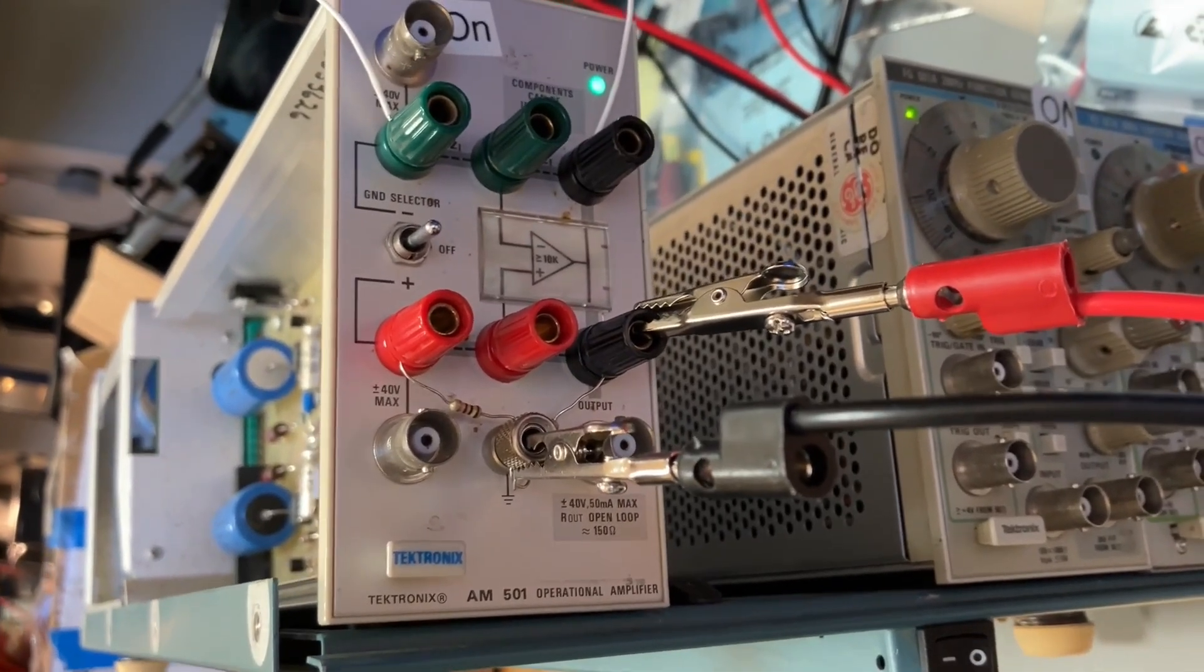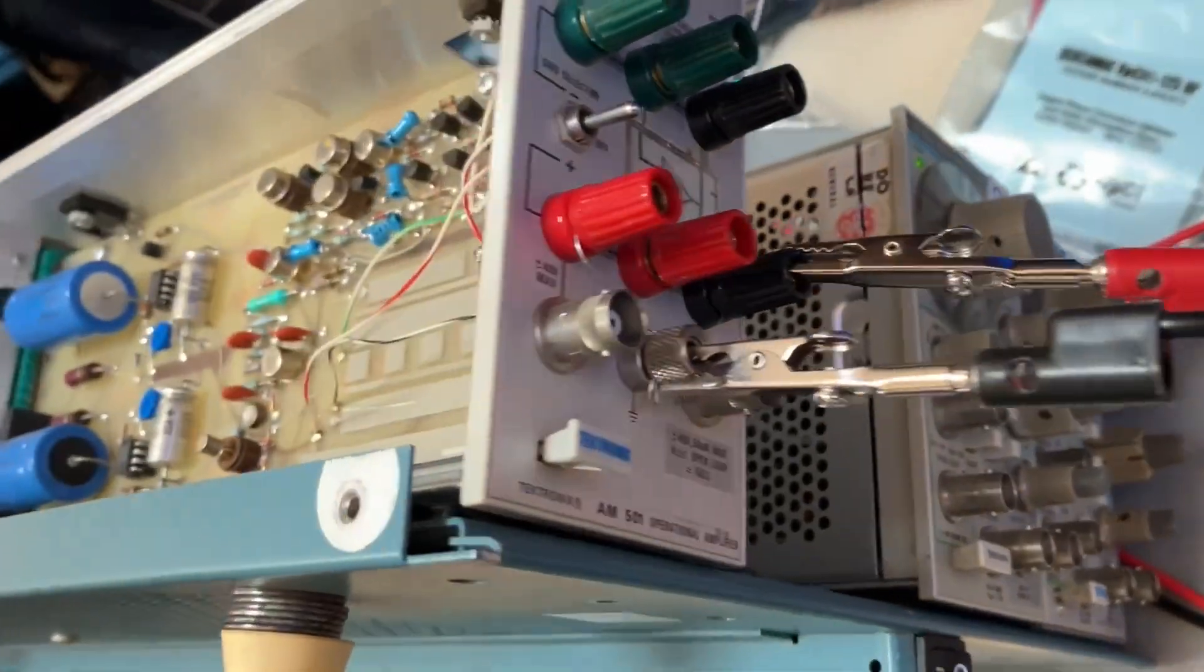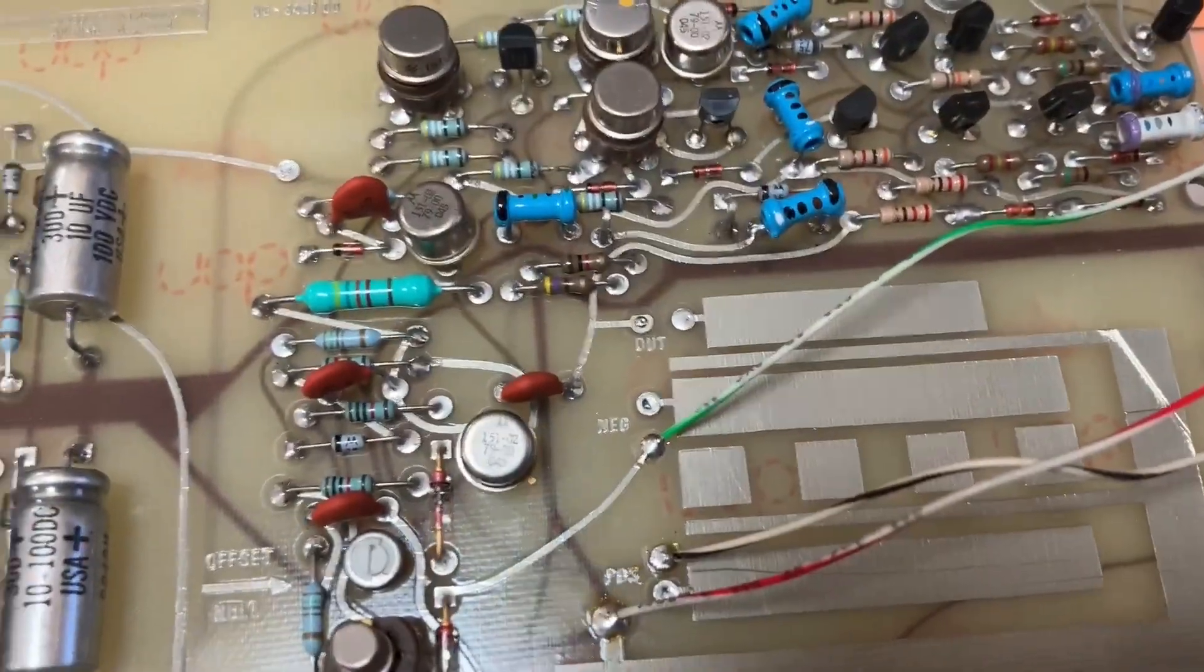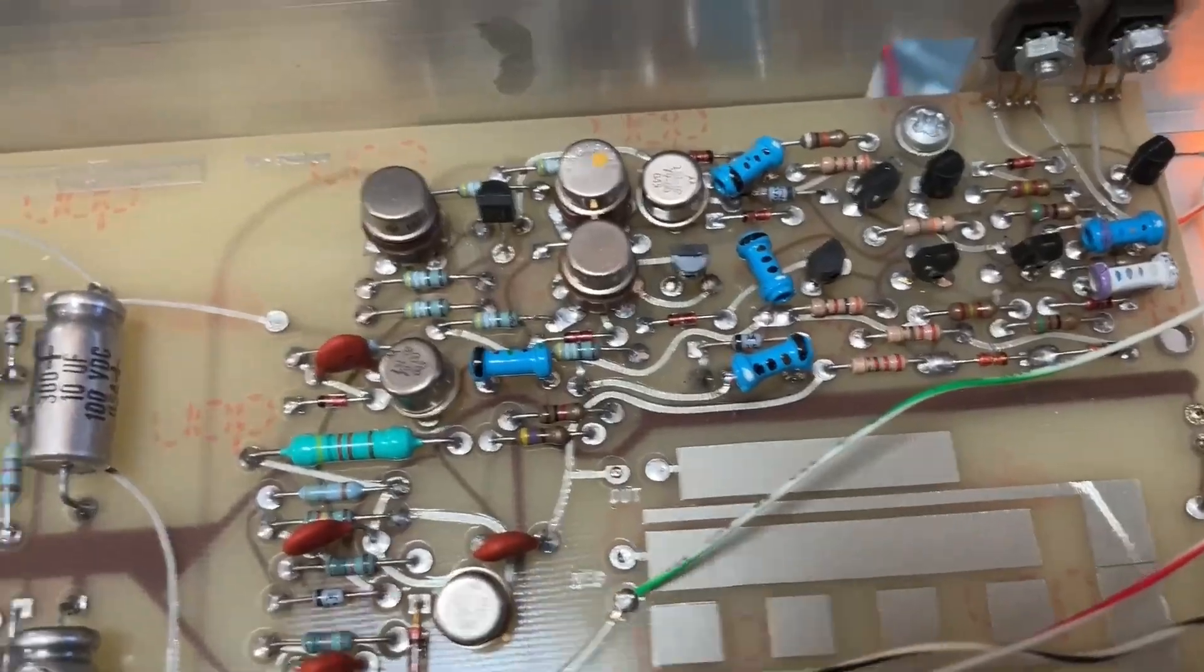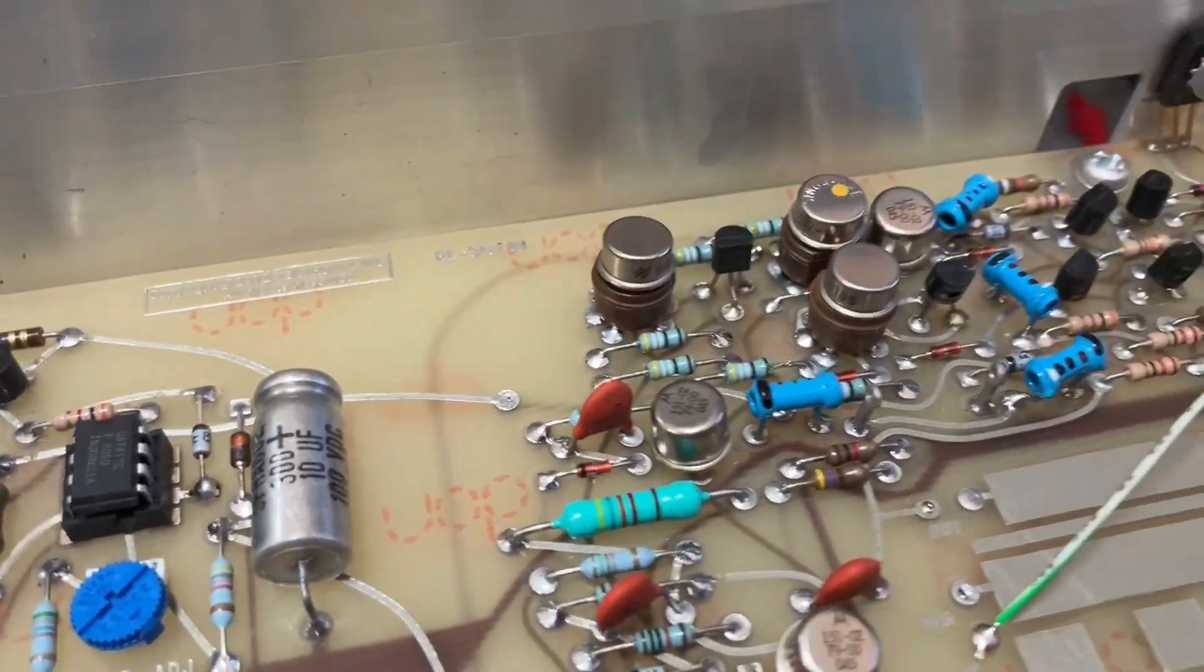Today on the bench we have a Tektronix AM501 operational amplifier. This is very old school, built with all these really awesome little metal can transistors, and look at this - these are socketed so you can replace them.